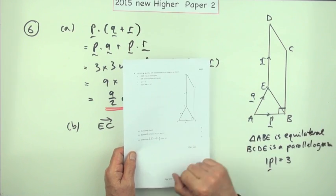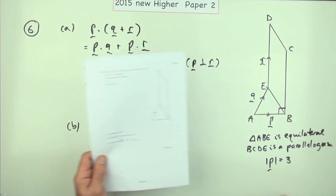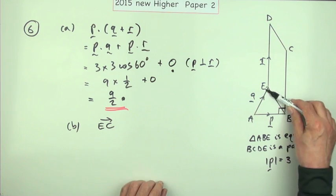Part B, just for one mark: express EC in terms of p, q, and r. EC, how do you get from E to C?